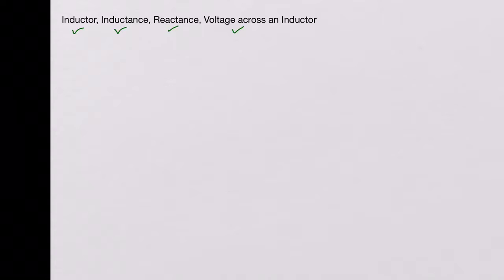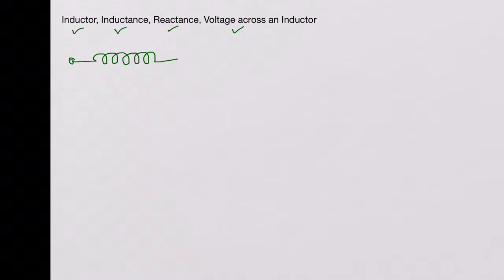An inductor is an electronic component that is used to store energy temporarily in a magnetic field, and schematically it is represented like this. You have the two terminals X and Y of the inductor, and it actually looks like a piece of wire which is wound up into a coil shape.